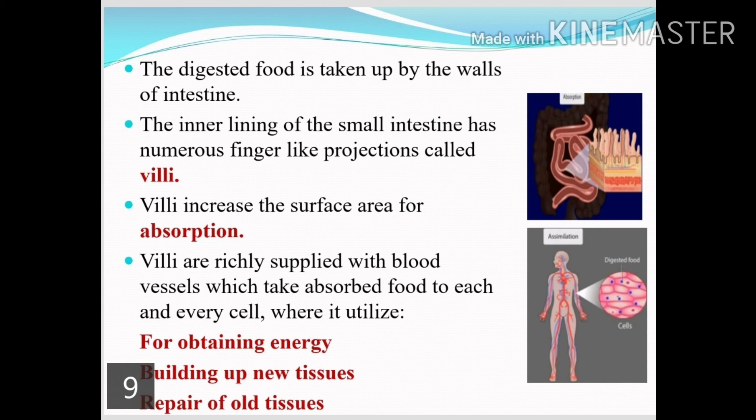The inner lining of the small intestine contains numerous finger-like projections called villi. Villi are richly supplied with blood vessels, which absorb the digested food and take it to each and every cell, where it is utilized for obtaining energy, building up new tissues, and repair of old tissues.